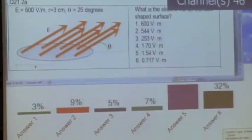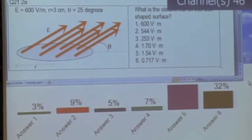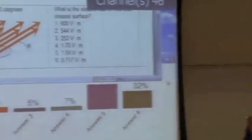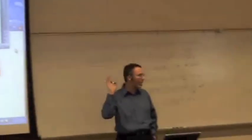45% of us fell into the trap. It's not 1.54. It is, in fact, 0.717 because how do you have to calculate this? What angle do you have to use? Well, you could use sine of 25 or cosine of 65.